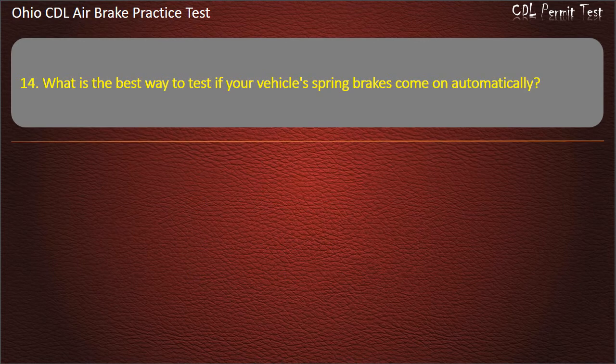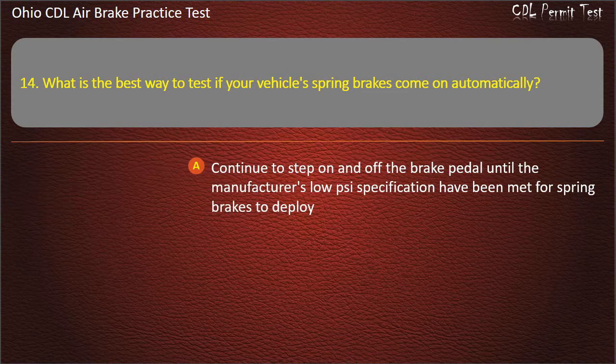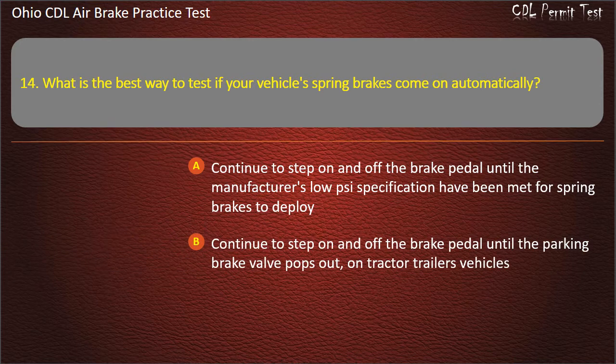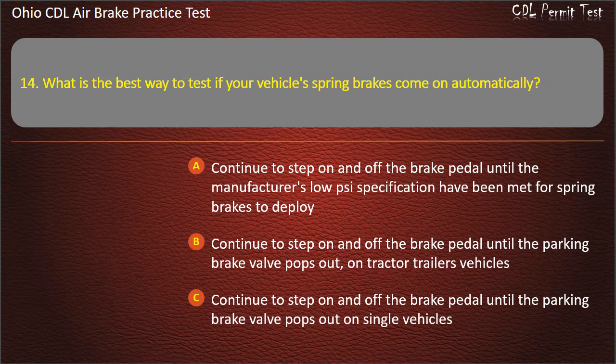Question 14: What is the best way to test if your vehicle's spring brakes come on automatically? Continue to step on and off the brake pedal until the manufacturer's specifications have been met for spring brakes to deploy. Continue to step on and off the brake pedal until the parking brake valve pops out on tractor-trailer vehicles. Continue to step on and off the brake pedal until the parking brake valve pops out on single vehicles. All of the above. Answer: All of the above.